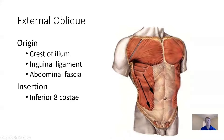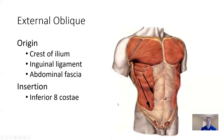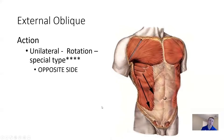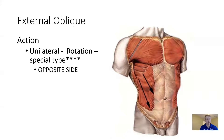These muscles will have insertions on the thorax and origins on connective tissue and the pelvis, because the pelvis is the most stable piece of this system. They're going to move those costae medially and inferiorly towards the midline, causing contralateral rotation — opposite side rotation. So right external oblique causes left rotation, and left external oblique causes right rotation. They're opposite side or contralateral rotators. Remember that — put a little star by it.